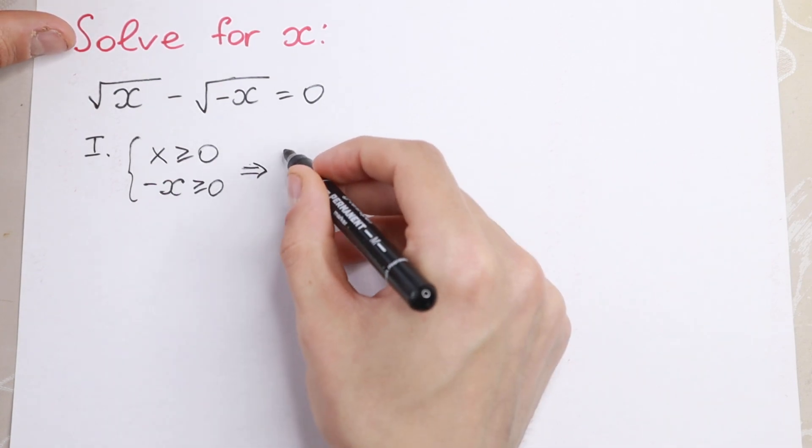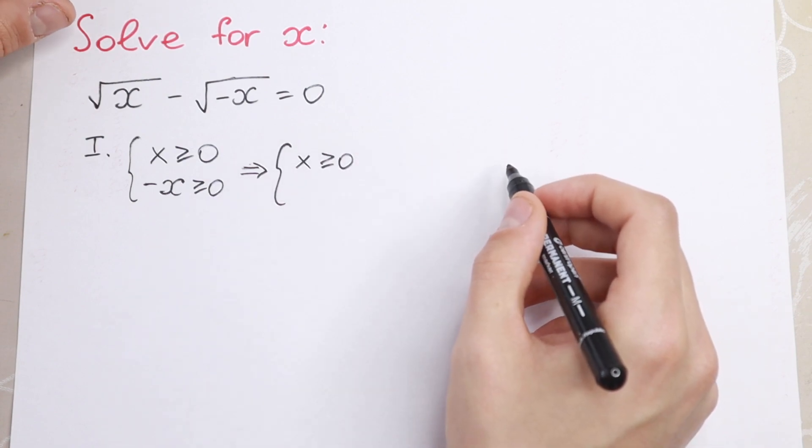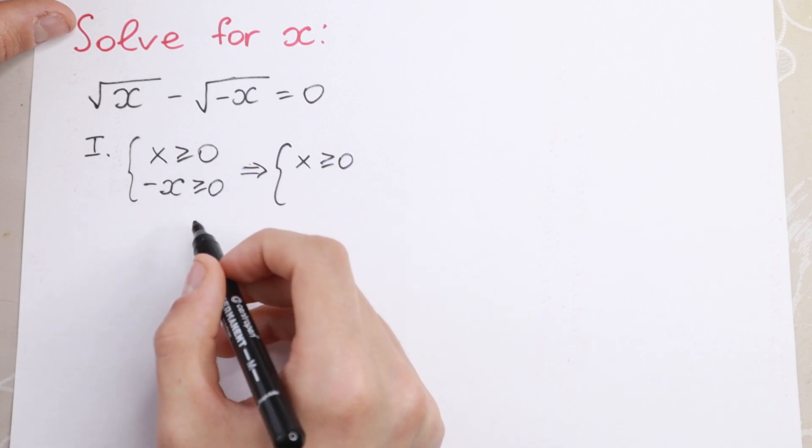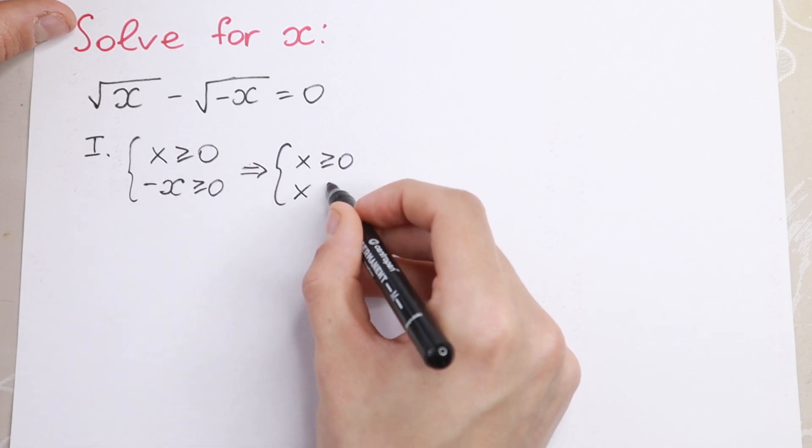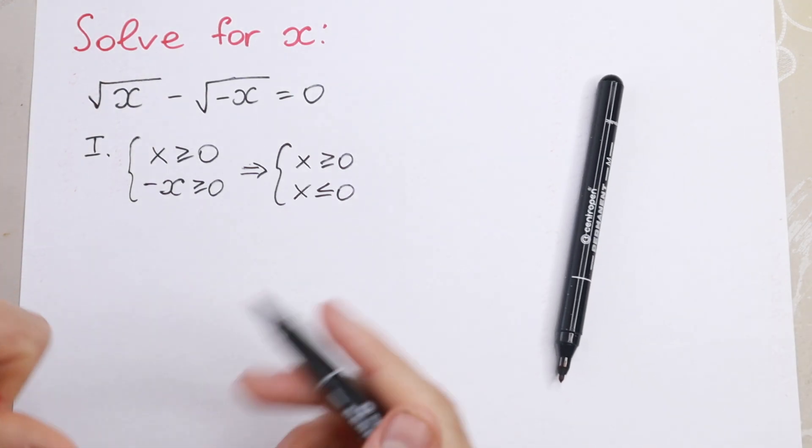This is not hard system of equations, because x is greater or equal to 0. This is our first line, and the second multiplying by minus 1. So if we multiply this, x is less than or equal to 0. So we have two equations.